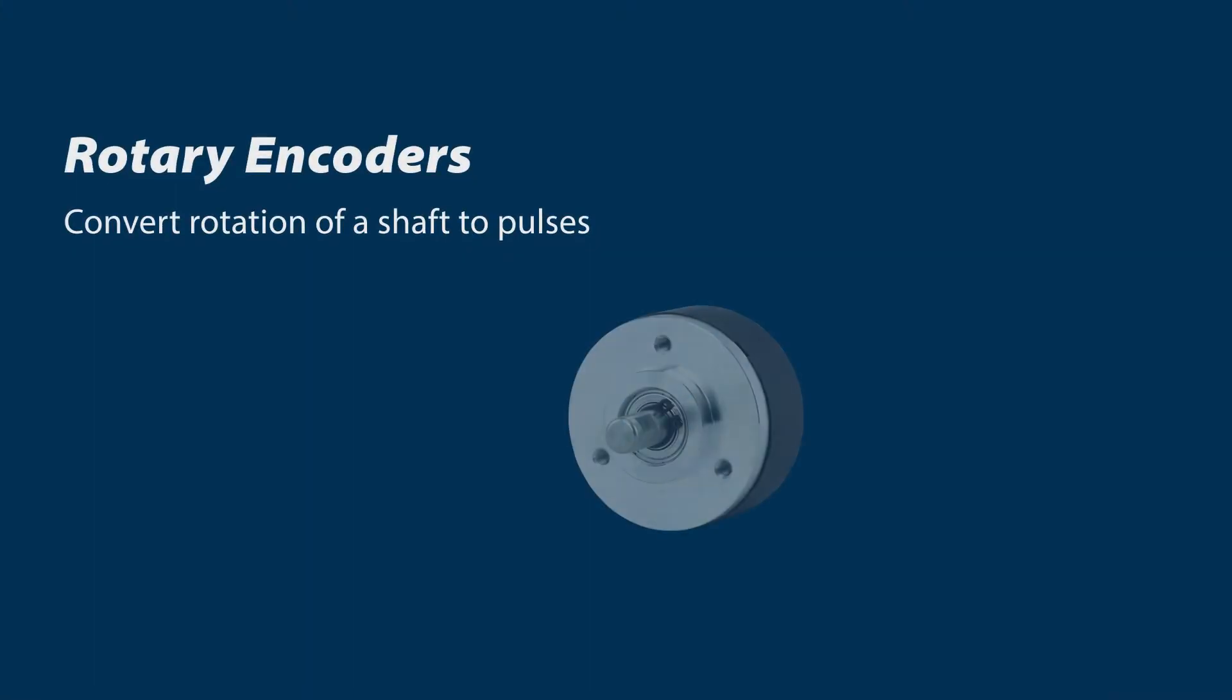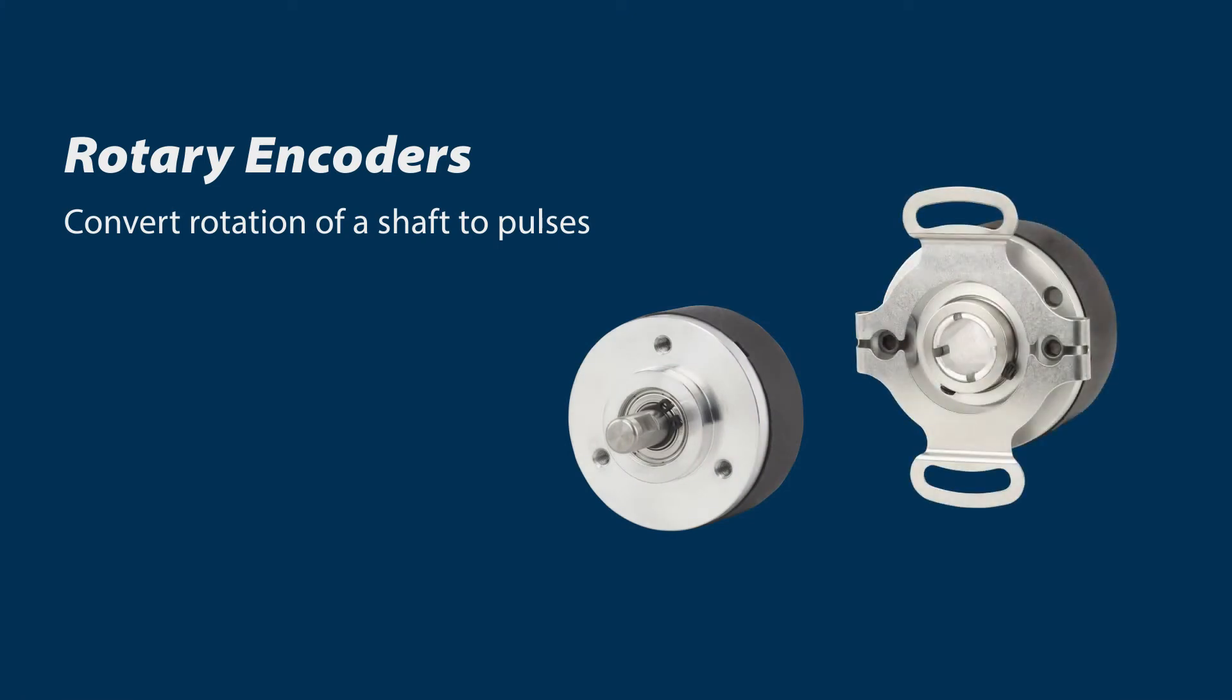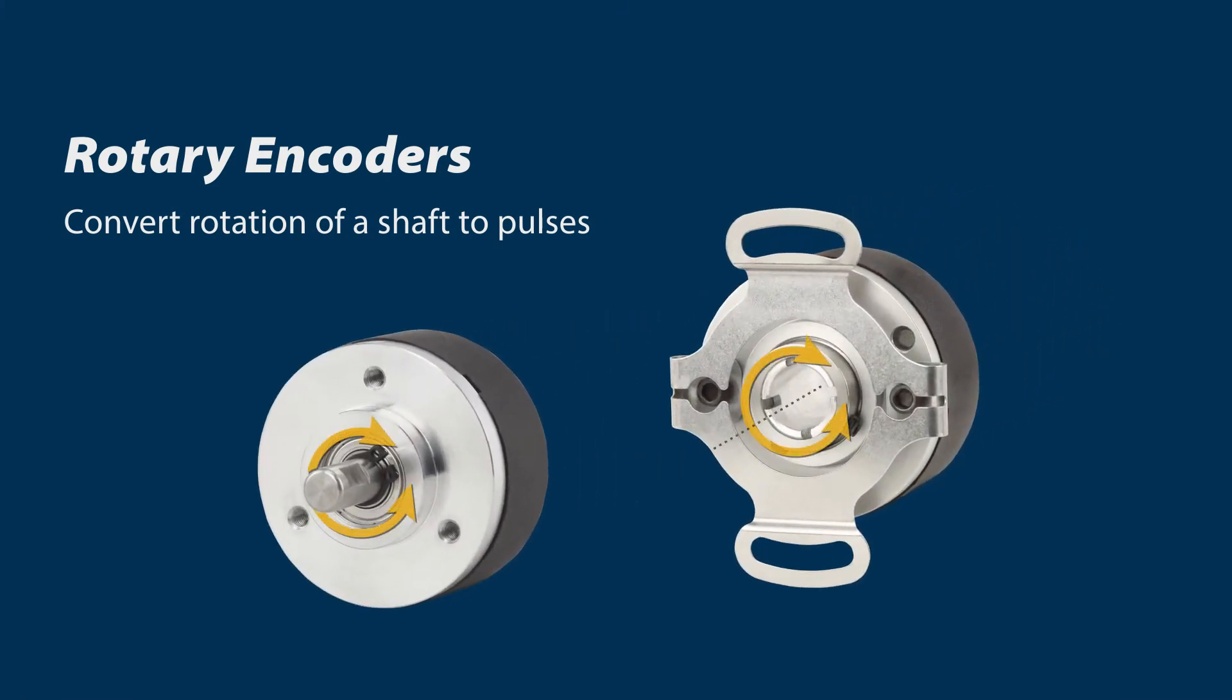What is an encoder? Well encoders, rotary encoders to be precise, are devices that allow you to measure speed or distance, velocity, and they do that by creating pulses.